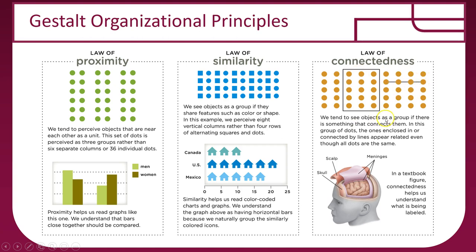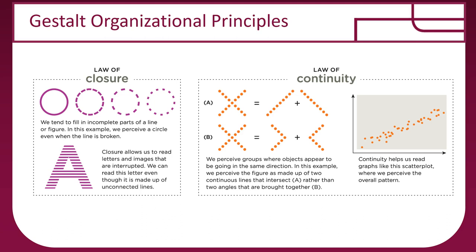The law of connectedness: we see objects as a group if something connects them, so four dots connected by a line are seen as a group. The law of closure: we tend to fill in incomplete parts of a line — we perceive a broken circle as a complete circle. The law of continuity: we perceive groups where objects appear to go in the same direction — we see two continuous intersecting lines rather than two V-shapes brought together.